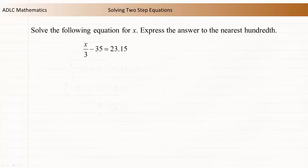Let's try another example. The equation is x/3 - 35 = 23.15. Note that the final answer should be expressed to the nearest hundredth.